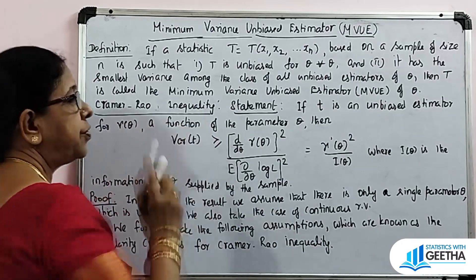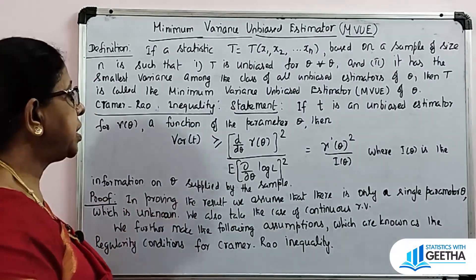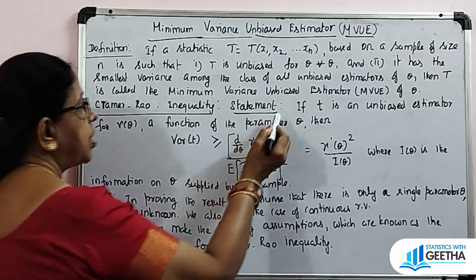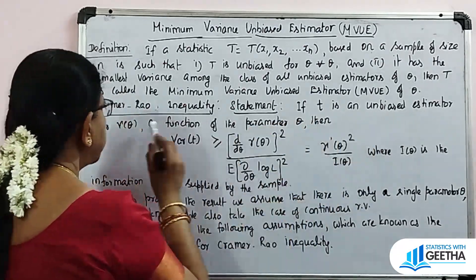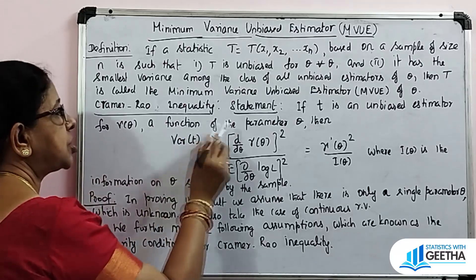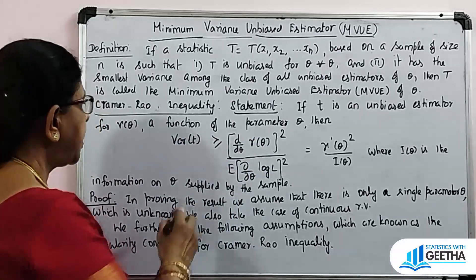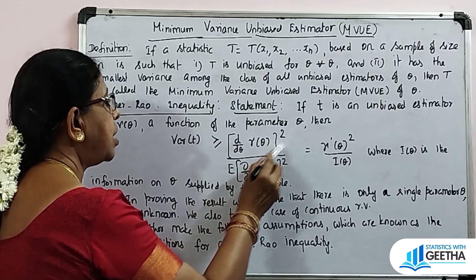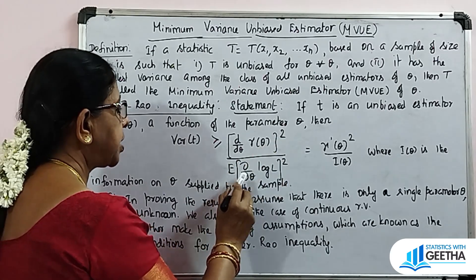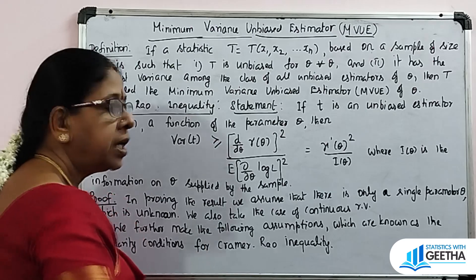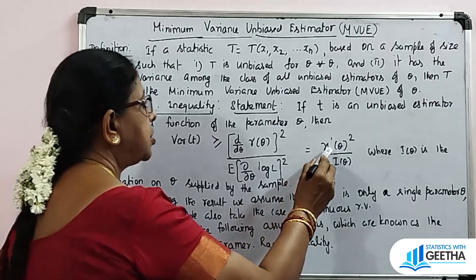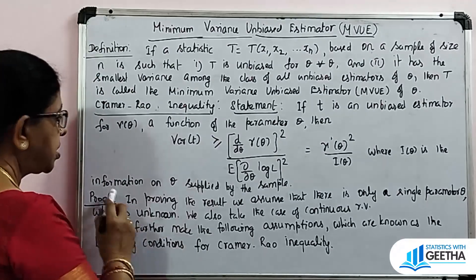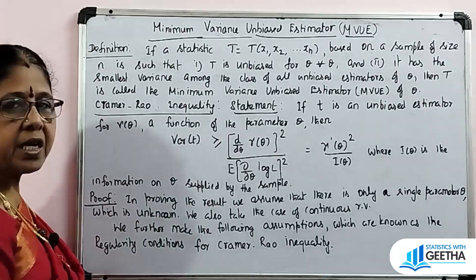Now, the Cramér-Rao inequality — this is a very important inequality under point estimation. Statement: if t is an unbiased estimator for γ(θ), a function of the parameter theta, then variance of t is greater than or equal to [d/dθ γ(θ)]² divided by the expectation of (∂/∂θ log L)², which equals [γ'(θ)]² divided by I(θ), where I(θ) is the information on theta supplied by the sample.